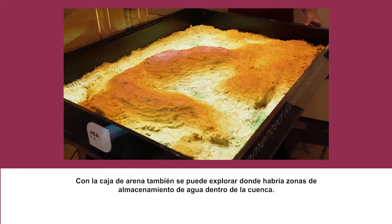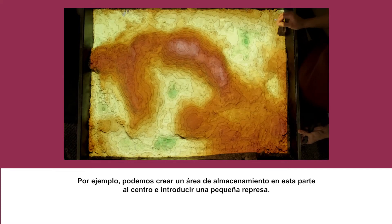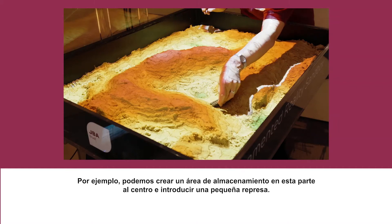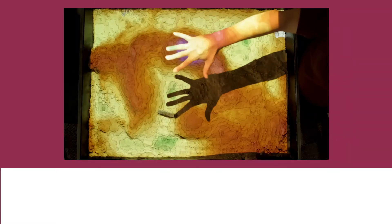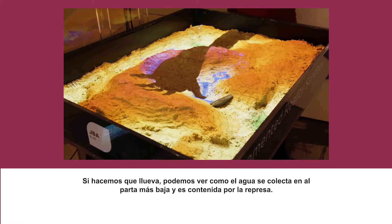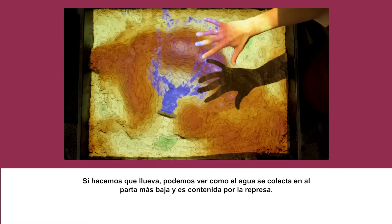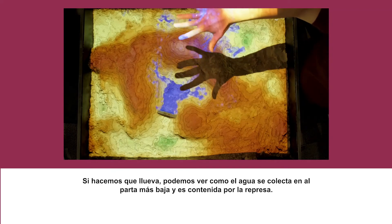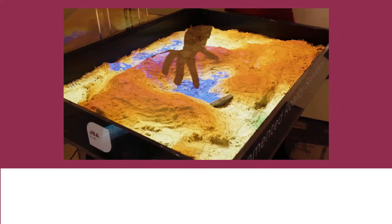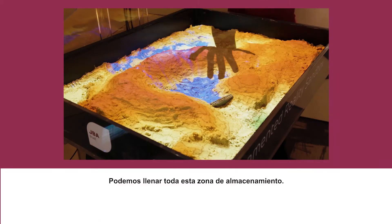In the sandbox, we can also explore where storage areas for water might exist in the catchment. For example, we could create a storage area here and introduce a small dam. Then if we rain over this bit, we can see how the water collects at the lowest point of the catchment, is stopped by the dam, and fills up this area of storage.